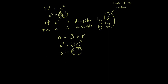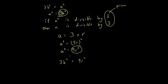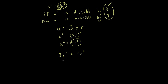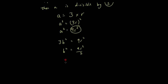Since both expressions equal a squared, they must equal each other: 3b squared equals 9r squared. Simplifying, b squared equals 9r squared divided by 3, which gives b squared equals 3r squared. So 9 divided by 3 is 3.